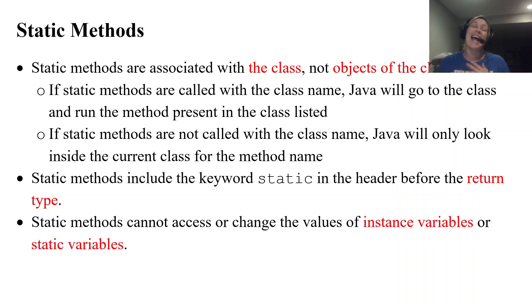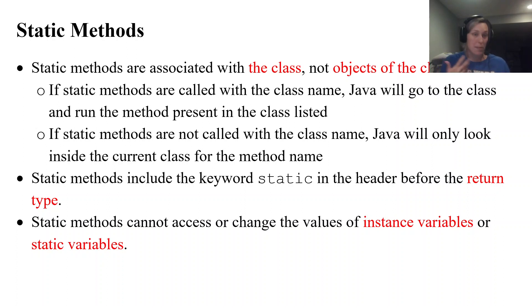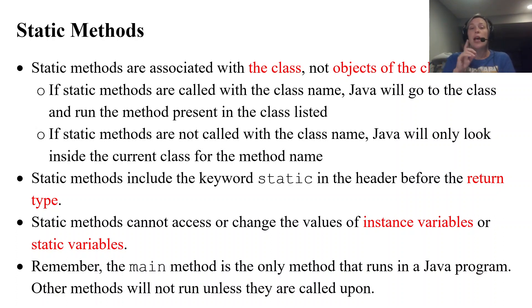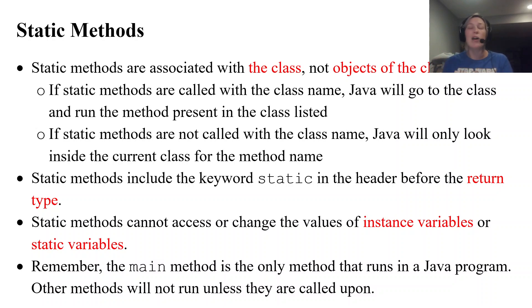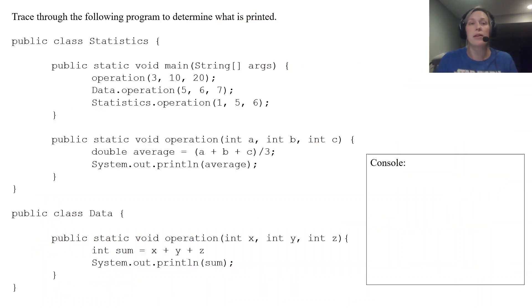Static methods cannot access or change any sort of instance variables or static variables. Static methods are just code that can be run whenever called on — they do not interact with object data. Remember that the main method is the only method that actually runs in a Java program. These static methods will not run unless they are called on through the main method or called on through another method.